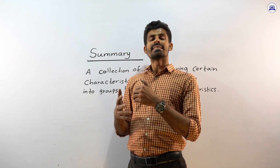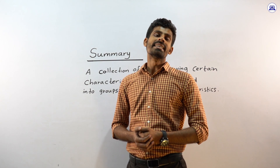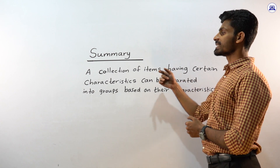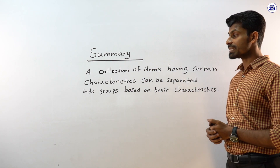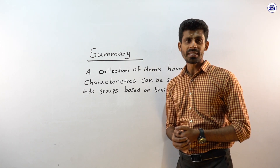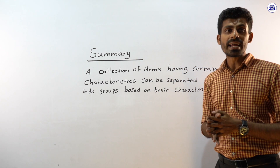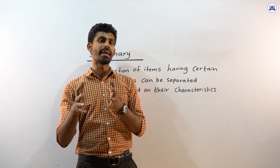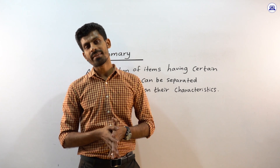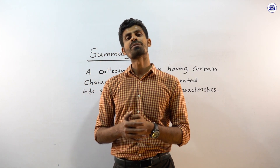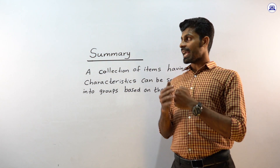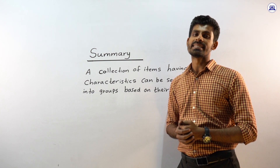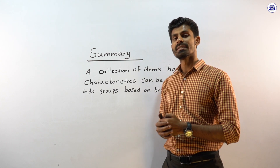My students, this is the summary and the end of the selection lesson. A collection of items having certain characteristics can be separated into groups based on their characteristics. Also, a group of items having common characteristics can be named based on those common characteristics. Hope this is very clear to you. Thank you very much. See you with the new lesson.